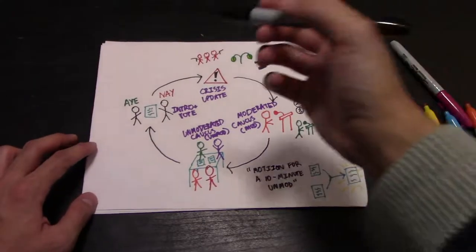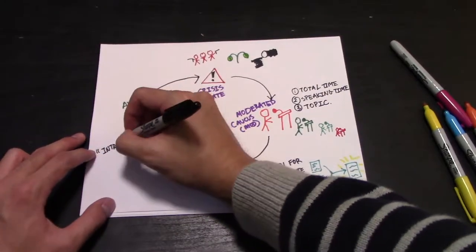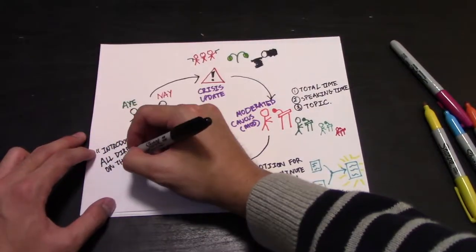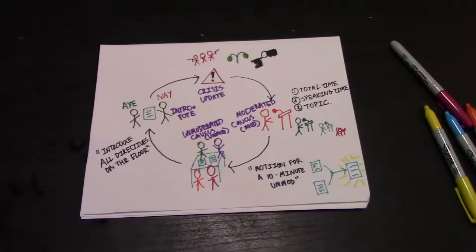Finally, after your delegates and you have written your directives, you can motion to introduce all directives on the floor. If this is passed, the chair will read aloud the directives.